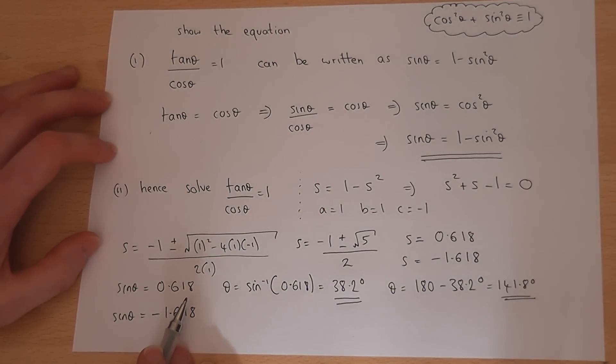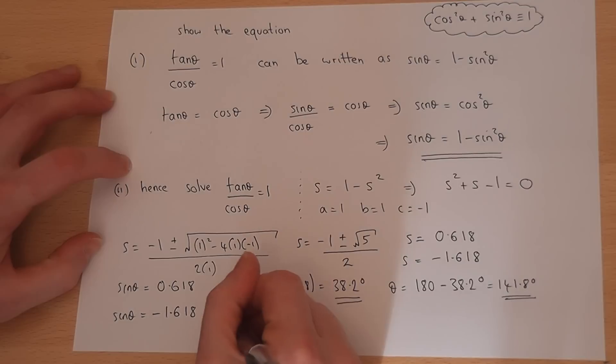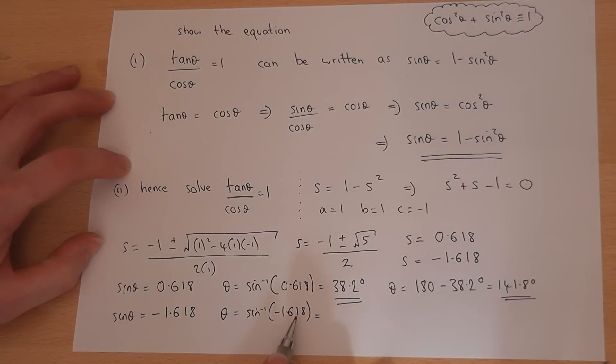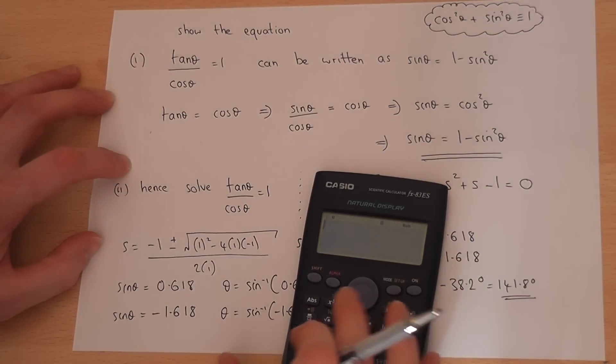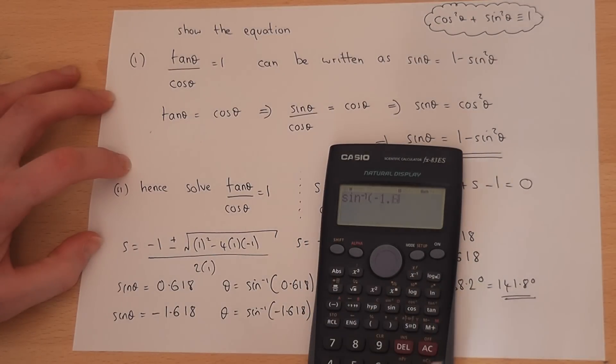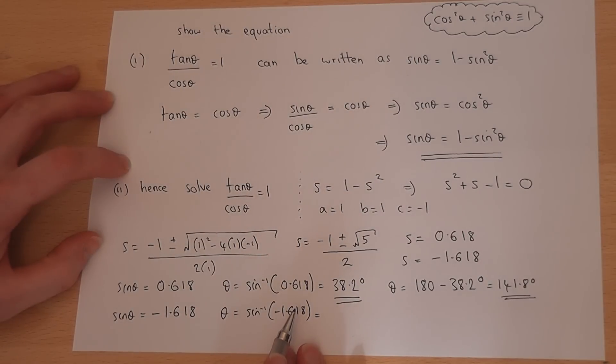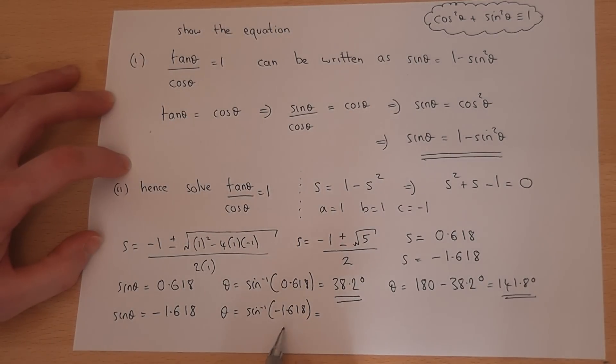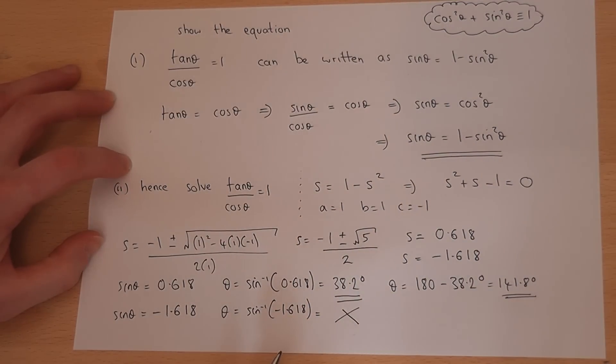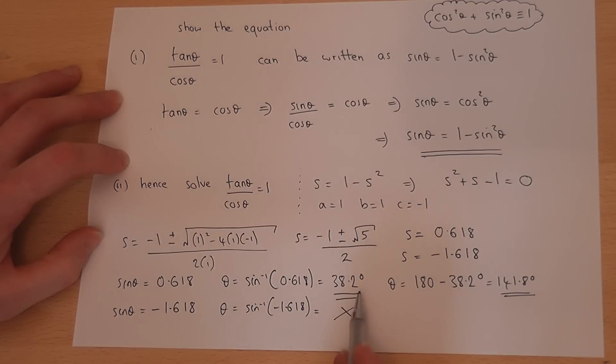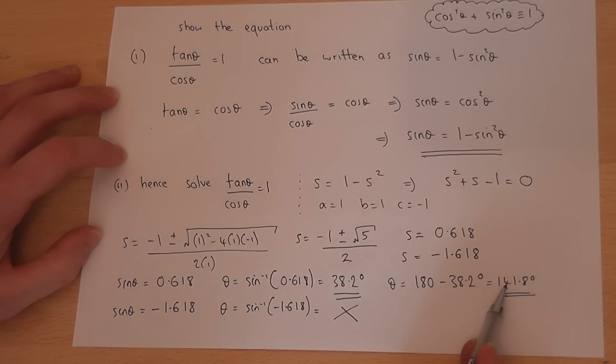To get other solutions, possibly, I would have to inverse sine this value. However, when you try to inverse sine this, you get a maths error. Inverse sine of minus 1.618, math error. That is because sine cannot take values which is below minus 1 or above 1. There are no solutions there. It's not a problem. The only two solutions we have for this range of values is 38.2 and 141.8.